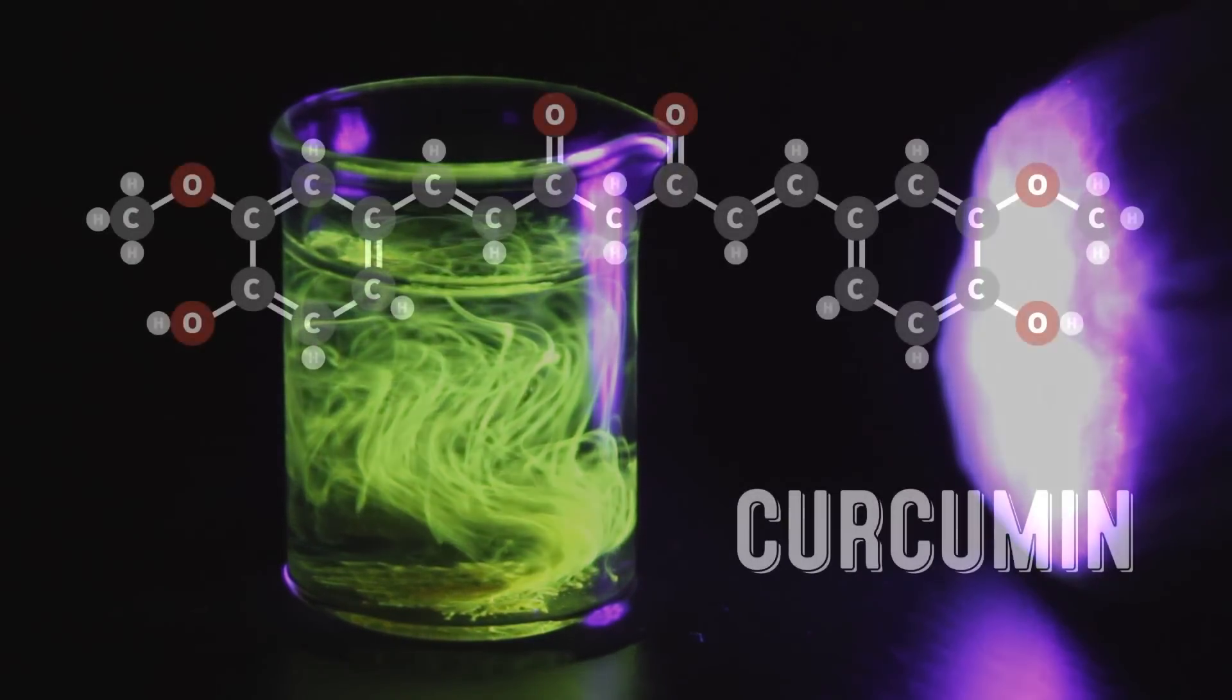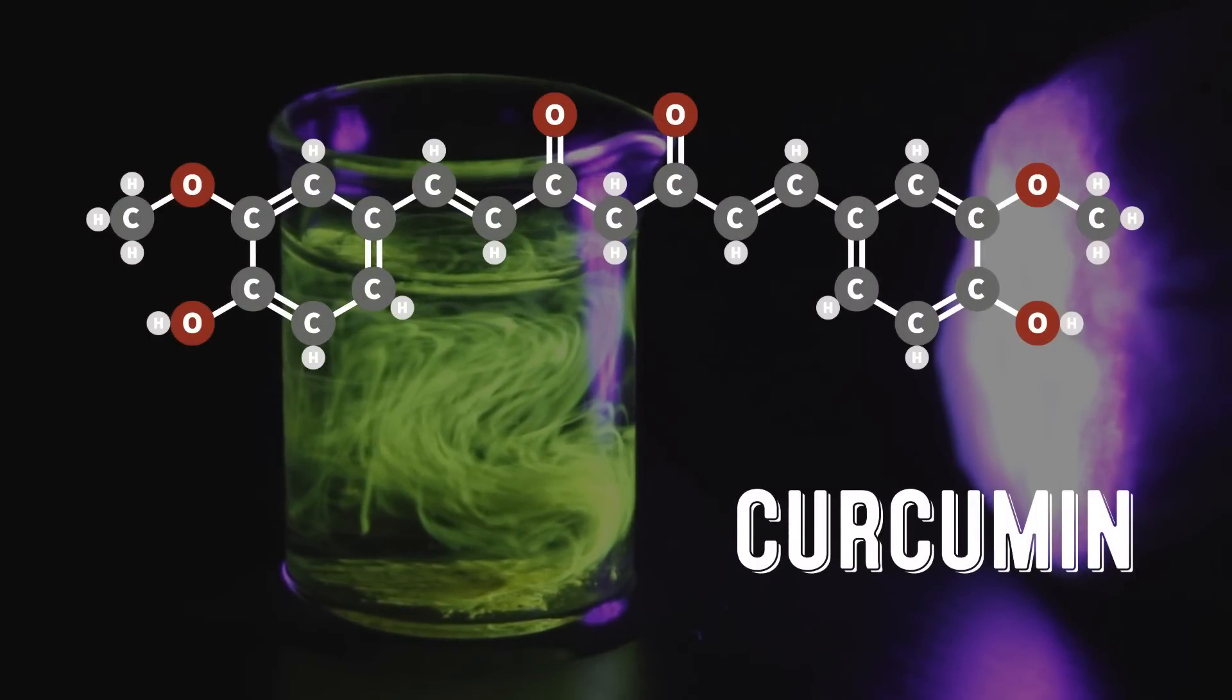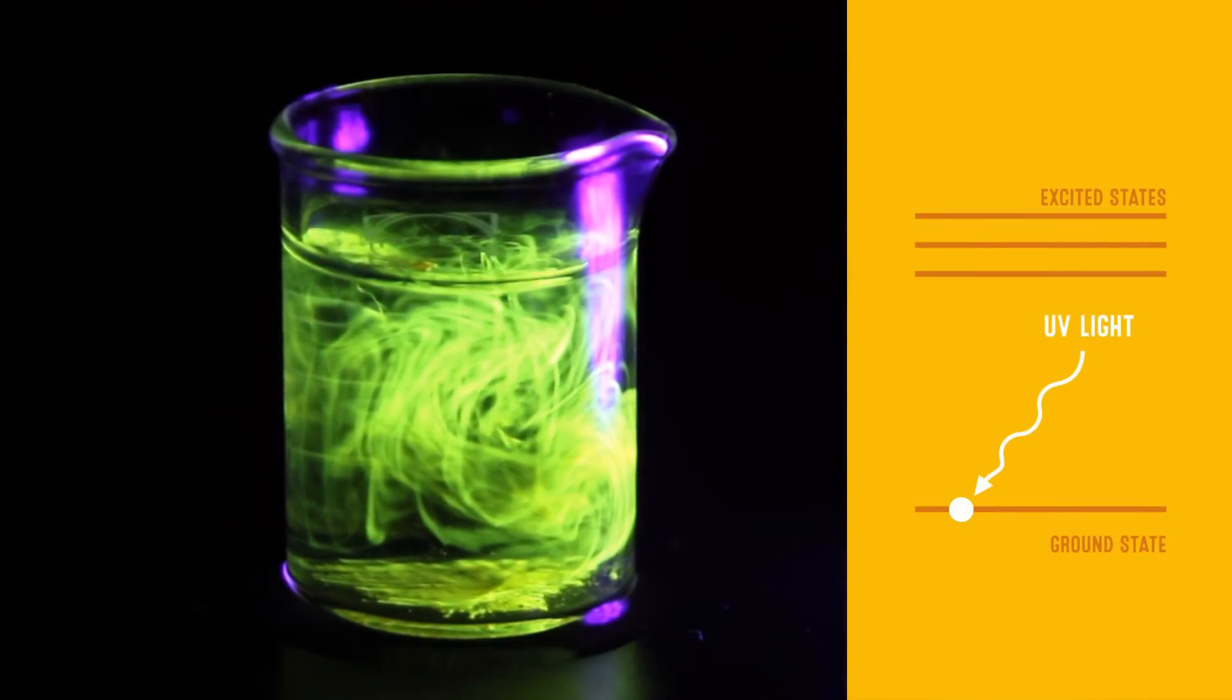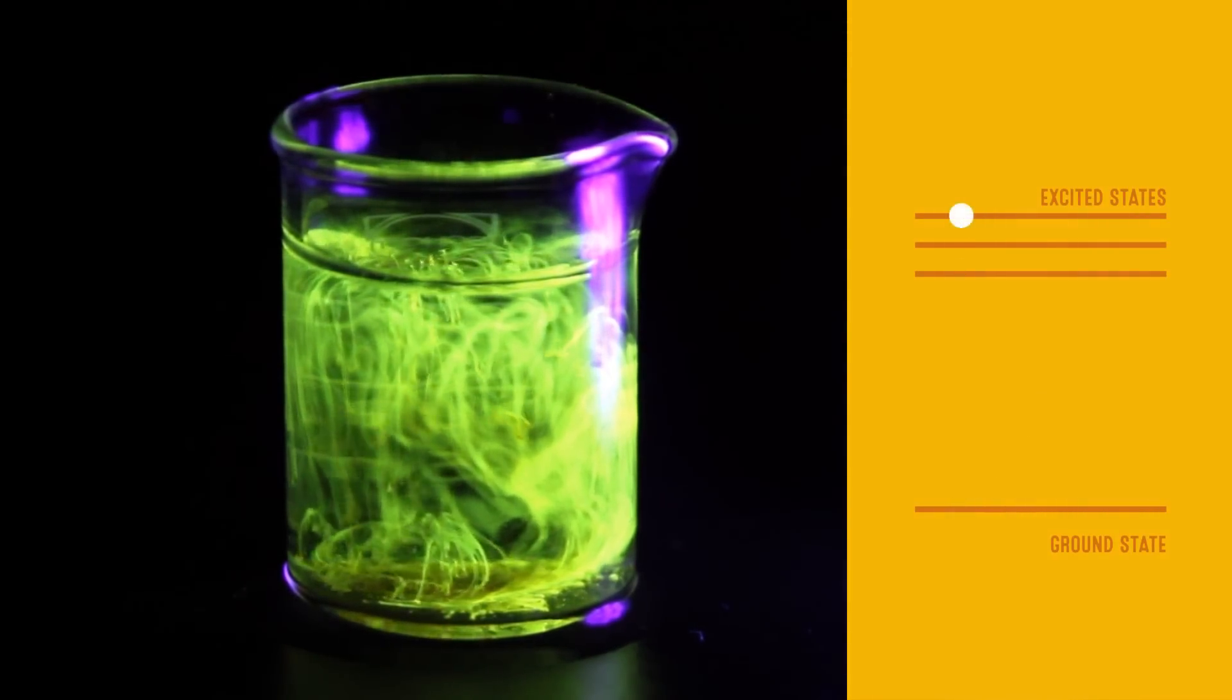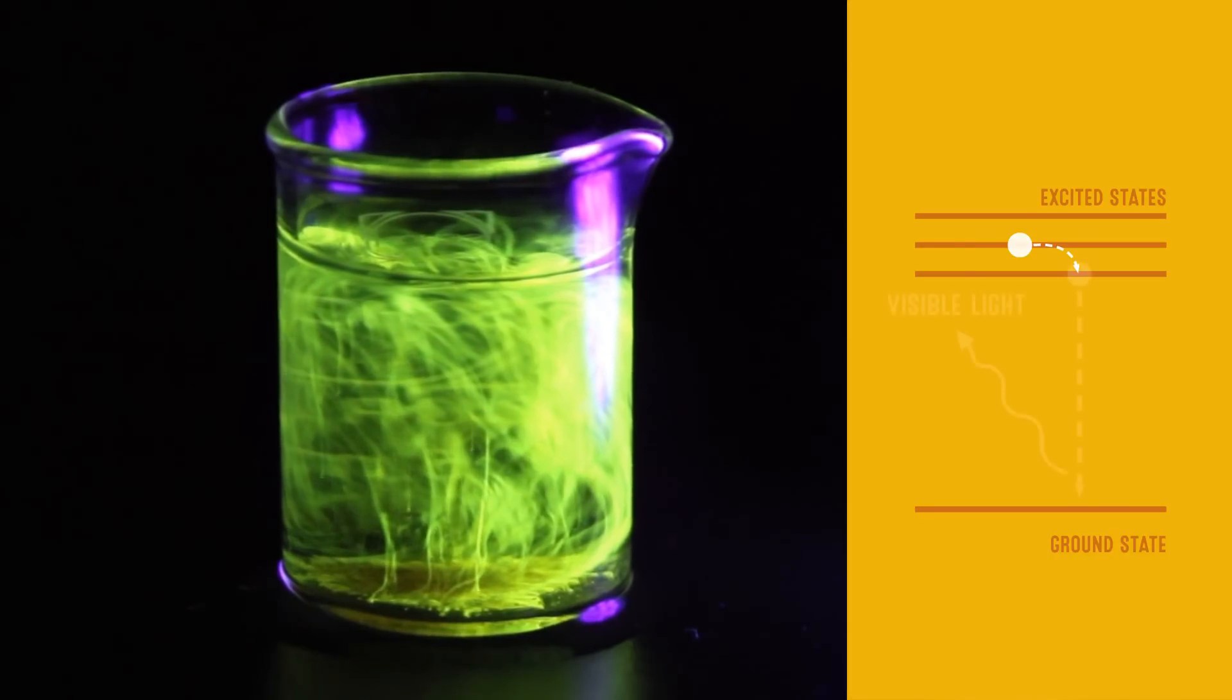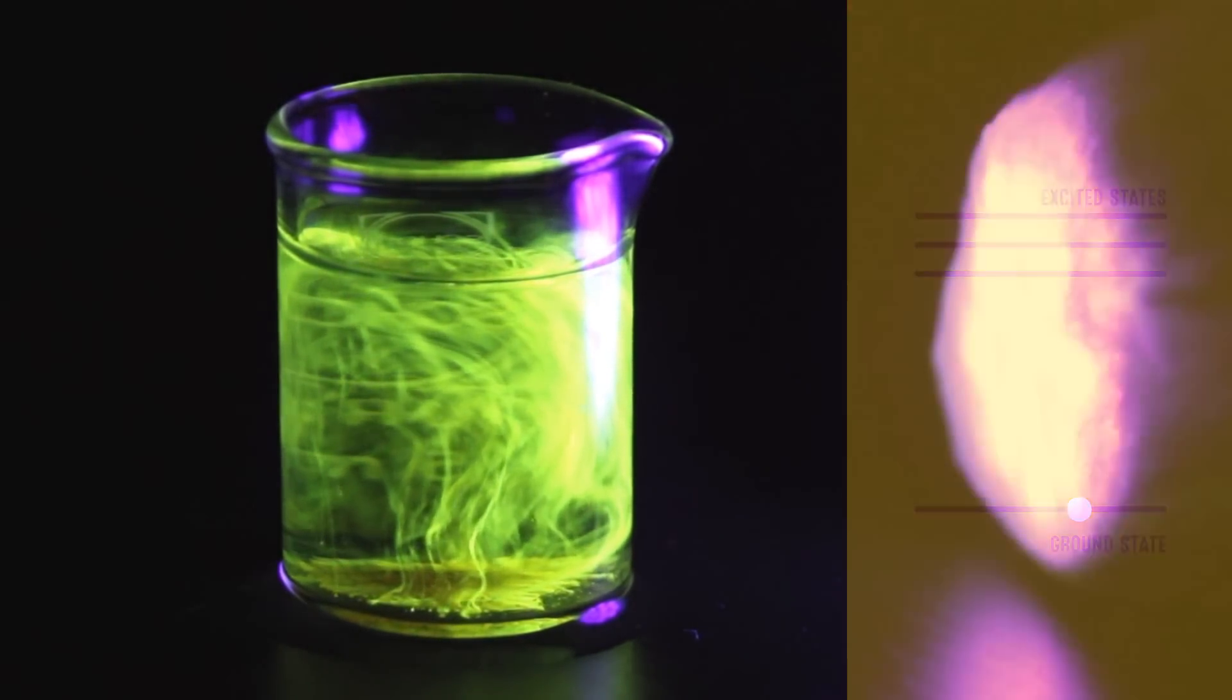The chemical culprit behind this ethereal glow is a compound found in turmeric called curcumin. Electrons in the curcumin molecules absorb light from the UV torch, gaining energy and moving to what we call an excited state. This doesn't last long though, and they quickly fall back to their original energy, giving off their excess energy as visible light, and creating the fluorescence effect we can see here.